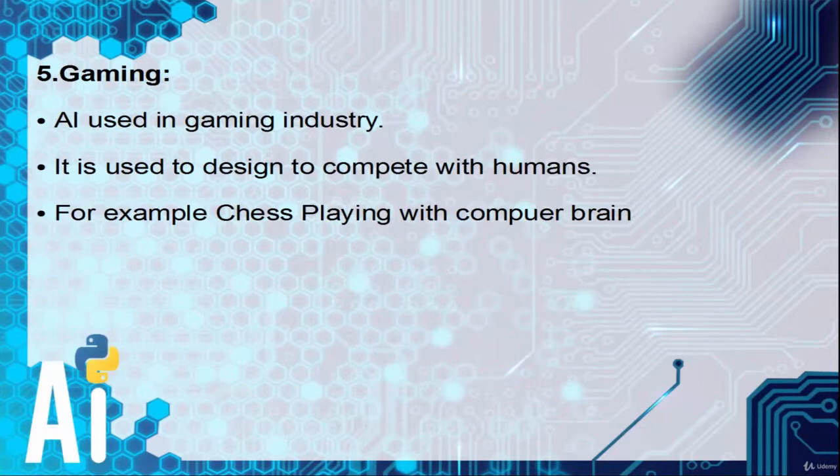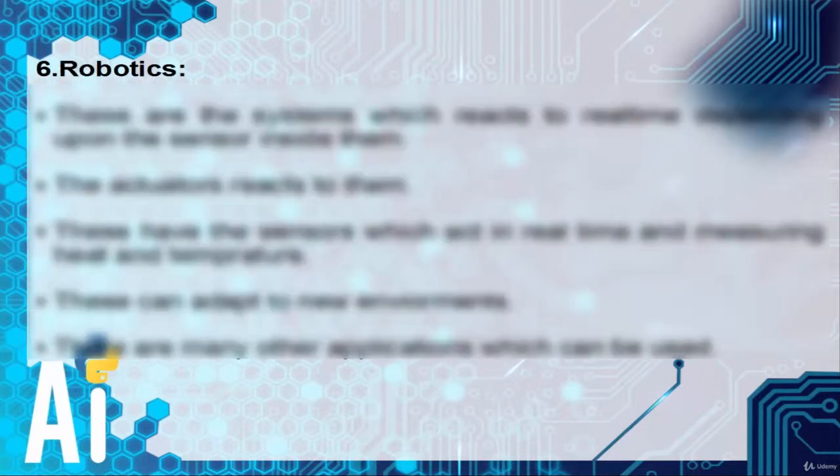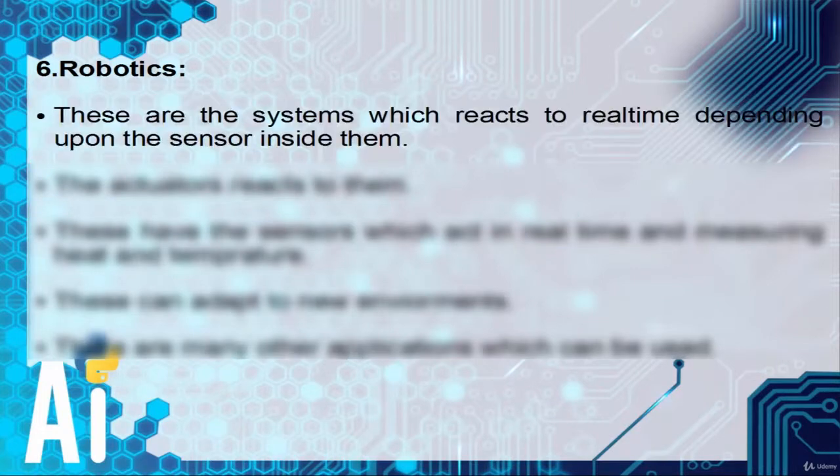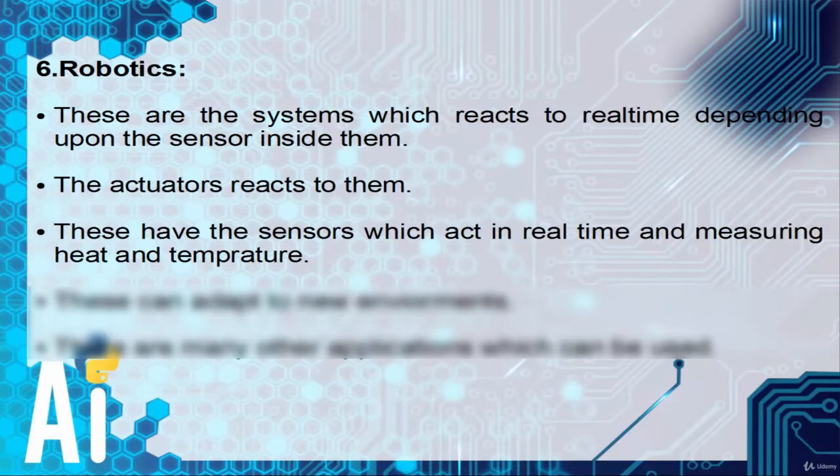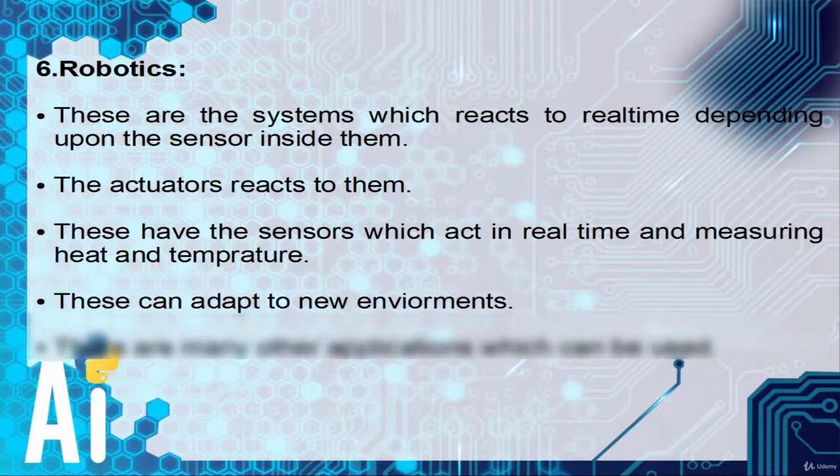Next, robotics. These are systems which react in real time depending upon the sensors inside them. The actuators react to them. These have sensors which act in real time, measuring heat and temperature. These can adapt to new environments.